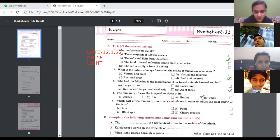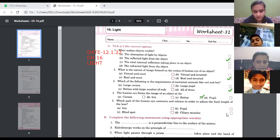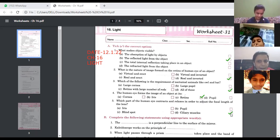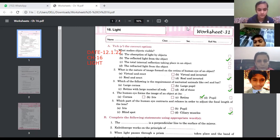Number five, which part of the human eye contracts and relaxes in order to adjust the focal length of the lens? Yes Veronica. Ciliary muscles. In the ciliary muscles the lens is fixed, so they contract and adjust the focal length of the lens itself. If you have done, can I erase?